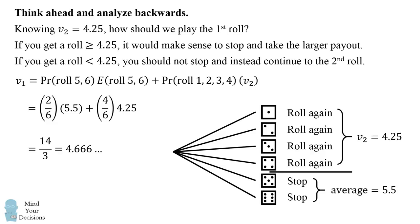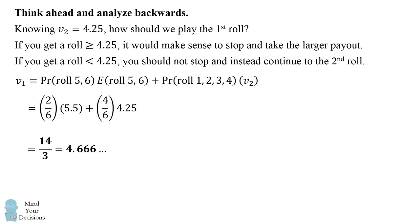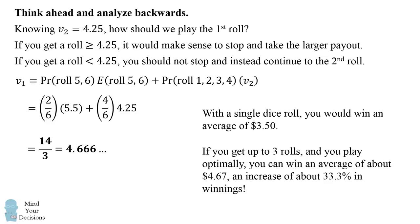So let's think about this. If we were to just roll the dice a single time, we would get an average of 3.5. But because we get up to 3 rolls and we play optimally, we can actually increase our average to about 4.67. And that's an increase of about 33.3% in winnings. So that's a huge increase in winnings because we're allowed the option of rolling a second and third time and we decide to roll optimally.